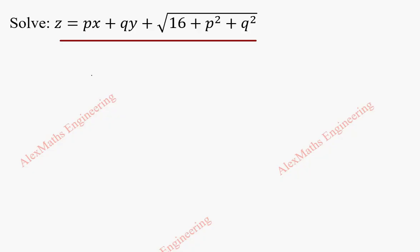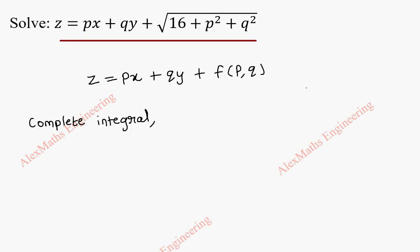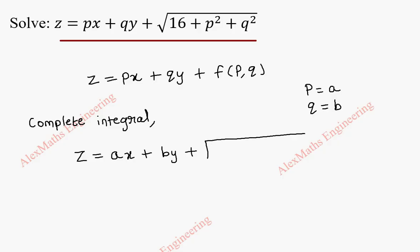This is of the form z equal to px plus qy plus f of p, q because the last term is a function in terms of p and q. For this, the complete integral is obtained by replacing p as a and q as b. So z equal to ax plus by plus root of 16 plus a square plus b square. This is our complete integral.